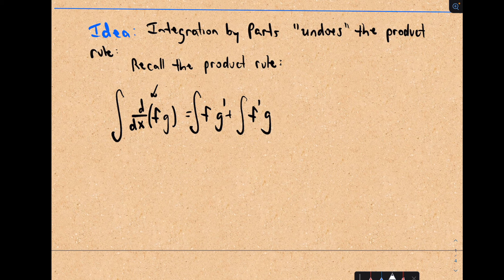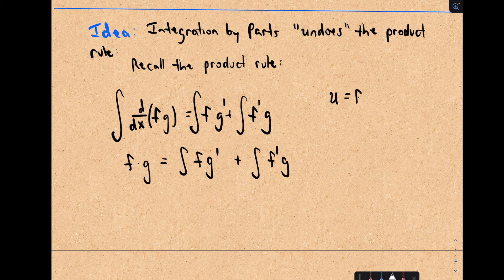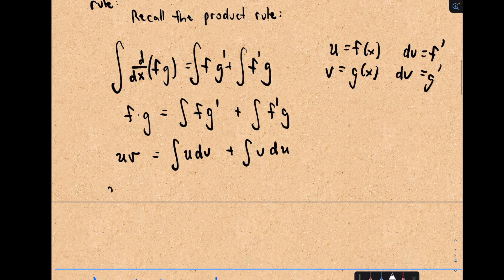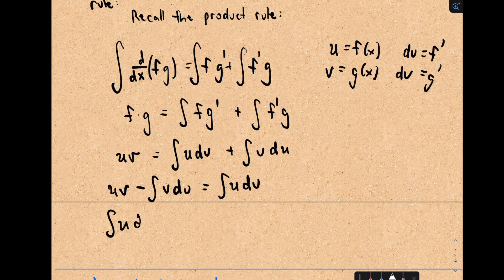If you take a derivative and then integrate, you're back to where you started, so you get f times g on the left. Now do a little relabeling: let u equal f of x and let v equal g of x. You can think of du as f prime and dv as g prime. On the left side you have uv, and on the right you get the integral of u dv plus the integral of v du. Rearranging, this gives uv minus the integral of v du equals the integral of u dv. Typically you see it written as: the integral of u dv equals uv minus the integral of v du.